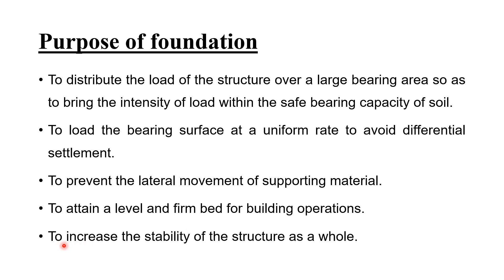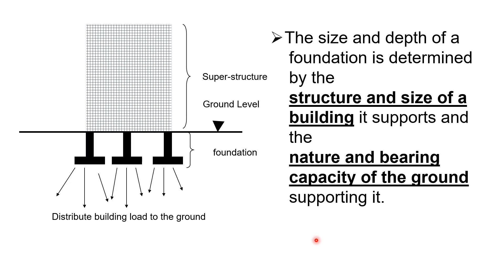The firm location increases the stability of the structure as a whole. Foundations are the backbone of the structure. If the foundation has some ambiguity or design faults, the building will not function properly. The foundations have their own importance. Above the ground level is the superstructure; below the ground level is the foundation or substructure. The arrows in the figure show the distribution of load into the soil.